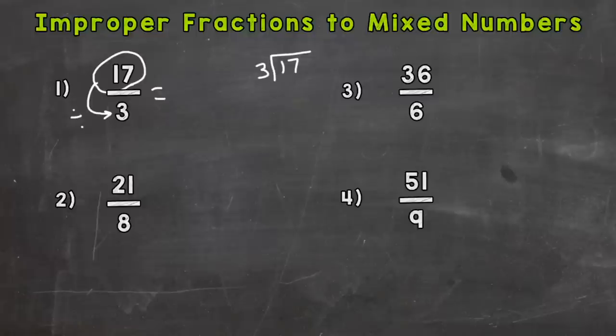How many whole groups of 3 can we pull out of 17? Hopefully you're thinking 5 whole groups. So that's our whole number for the mixed number for our answer. So it doesn't work out exactly. There's going to be a remainder. So 5 times 3 is 15. Subtract, and we get 2 left over.